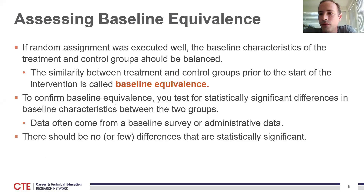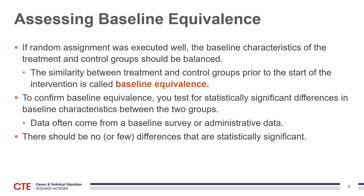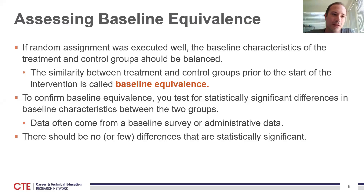On assessing baseline equivalence: if random assignment was executed well, the baseline characteristics of treatment and control groups should be balanced. To confirm this, you can test for statistically significant differences between characteristics measured at baseline — that is, before the treatment was offered — using data from a baseline survey or existing administrative data covering the pre-intervention period. If random assignment was successful, there should be no or few statistically significant differences in baseline characteristics between the treatment and comparison groups, though random imbalances can happen. Stratifying from the beginning helps reduce that risk.